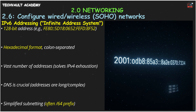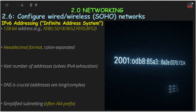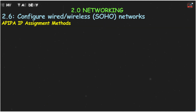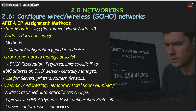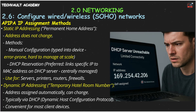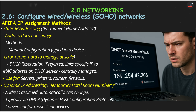What happens if your device can't find a DHCP server to get an IP address? It might use APIPA — Automatic Private IP Addressing. This is a fallback, like a lost-and-found address. If your device gets an IP starting with 169.254.x.x, that's APIPA. With it, you can only talk to other devices on your immediate local network, not the internet. It's a sign you need to troubleshoot your DHCP setup.